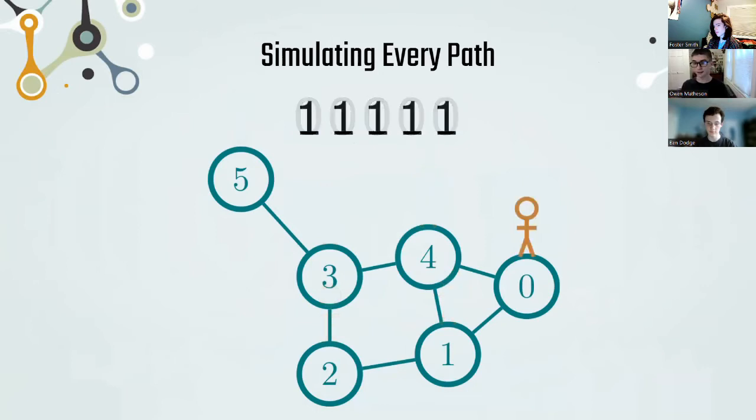But in order to extract any meaningful data out of that we have to measure it. And measuring it chooses one path to show us. So the way that we get around this we're going to measure it a bunch of times in order to get a sense of where the walker is traveling on the graph.